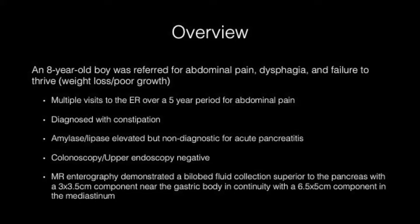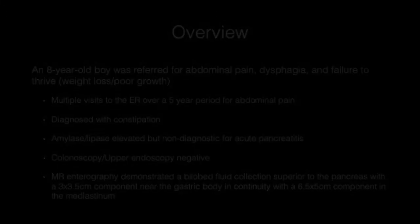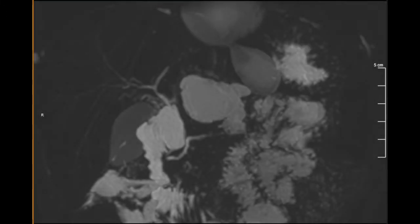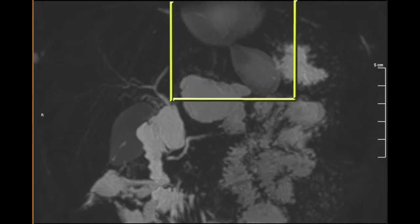He had previously undergone colonoscopy and upper endoscopy, both of which were negative. MR cholangiopancreatography was performed demonstrating a bilobed fluid collection superior to the pancreatic body, with a 3 by 3.5 centimeter component near the gastric body in continuity with a 6.5 by 5 centimeter component within the mediastinum. After evaluation, this lesion was felt to be most consistent with a pancreatic fluid collection. The patient was subsequently diagnosed with hereditary chronic pancreatitis related to two mutations in the chymotrypsin C gene.